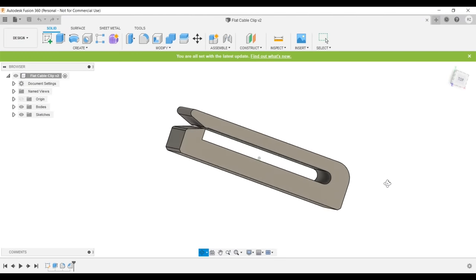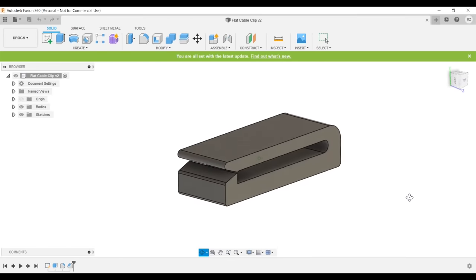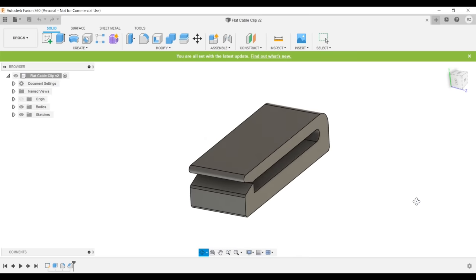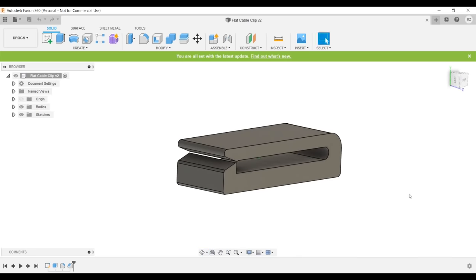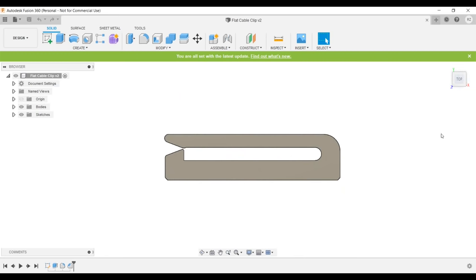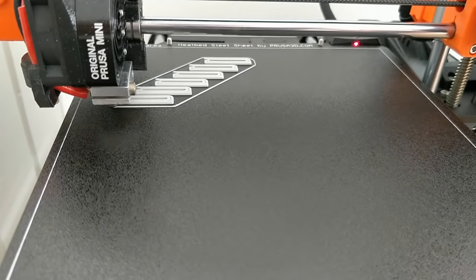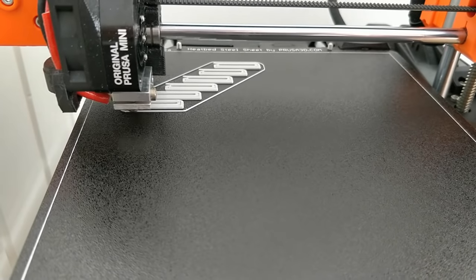For the flat cable, I printed out a cable clamp, which I designed in Fusion 360. It is based on a design I found on Thingiverse, but now that I want to reference it, I can't find it anymore between the many designs people have posted. I will place my own version of this clip on Thingiverse or GrabCAD as well, and I will link it below.